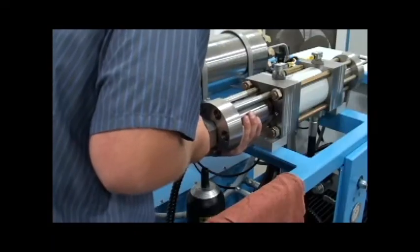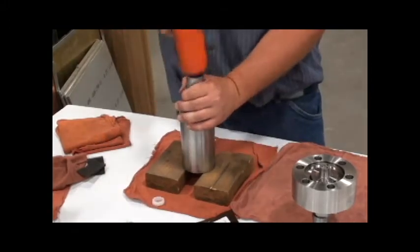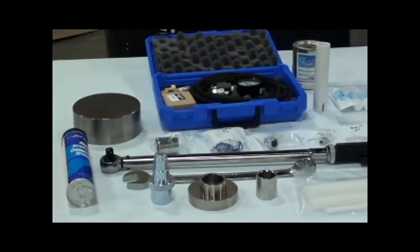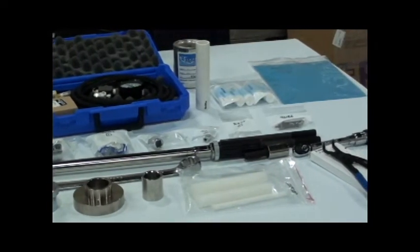Replacing the high pressure intensifier seals on your JetEdge pump is easy. This can be done in under a half hour. To replace your seals, you will need a JetEdge seal replacement kit and a few standard tools.